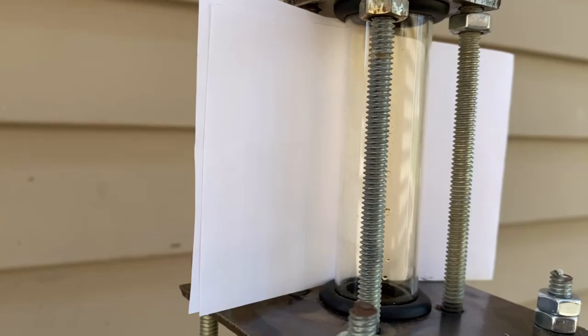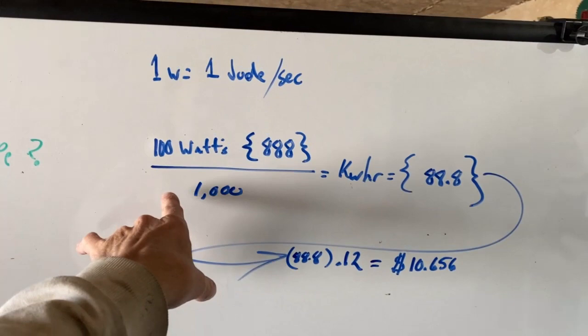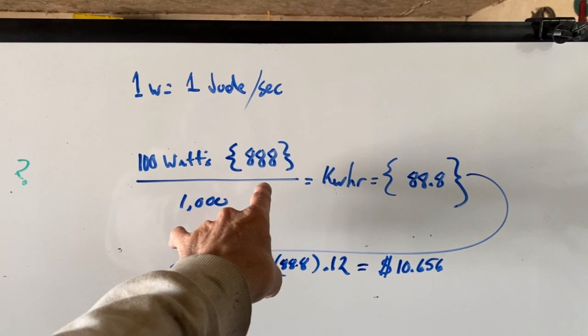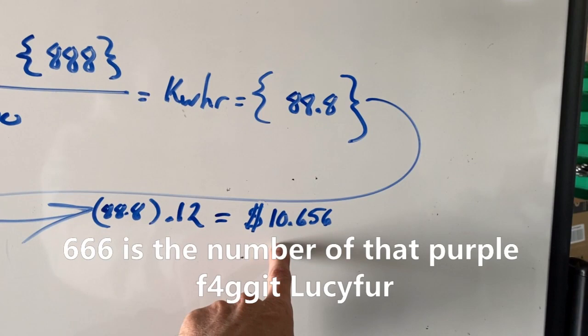All right fellas, just a quick little recap here. We've got 100 watts for 888 hours, that's 37 days. Divided by a thousand equals 88.8 kilowatt hours. 88.8 times 12 cents per kilowatt hour is $10.56 for a 1.5 liter bottle of 16 percent solution of nitric acid.